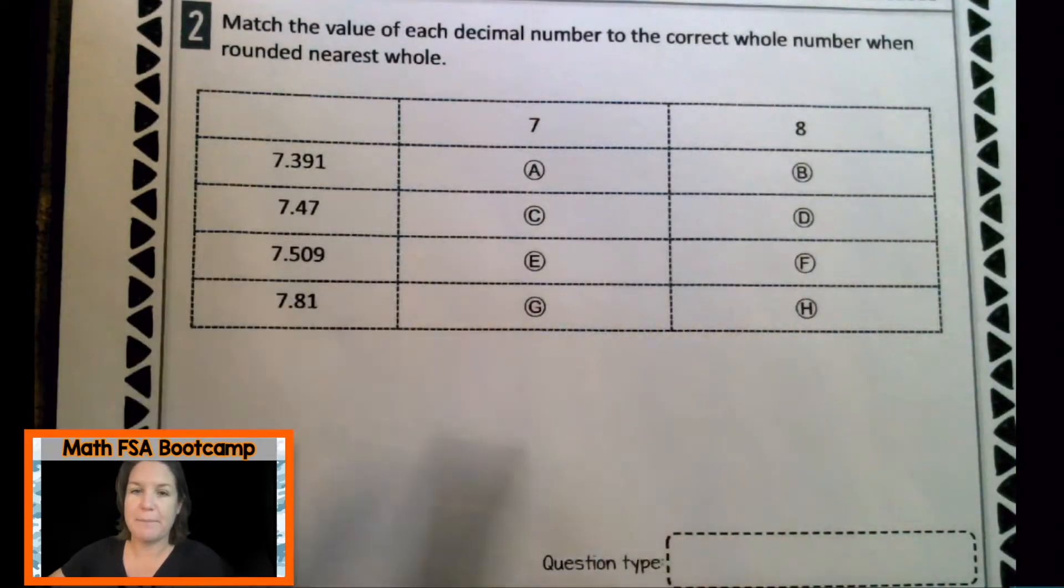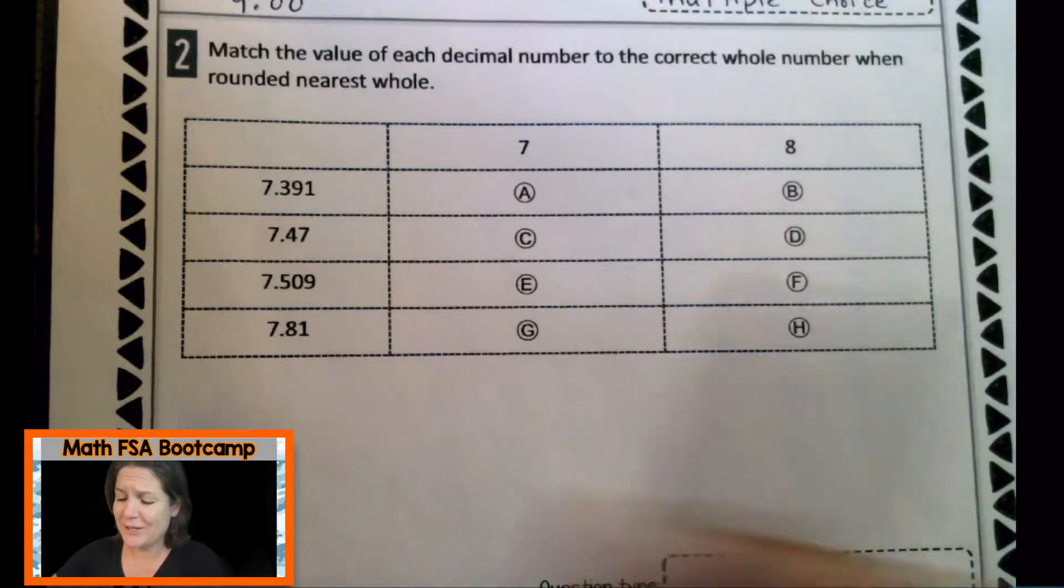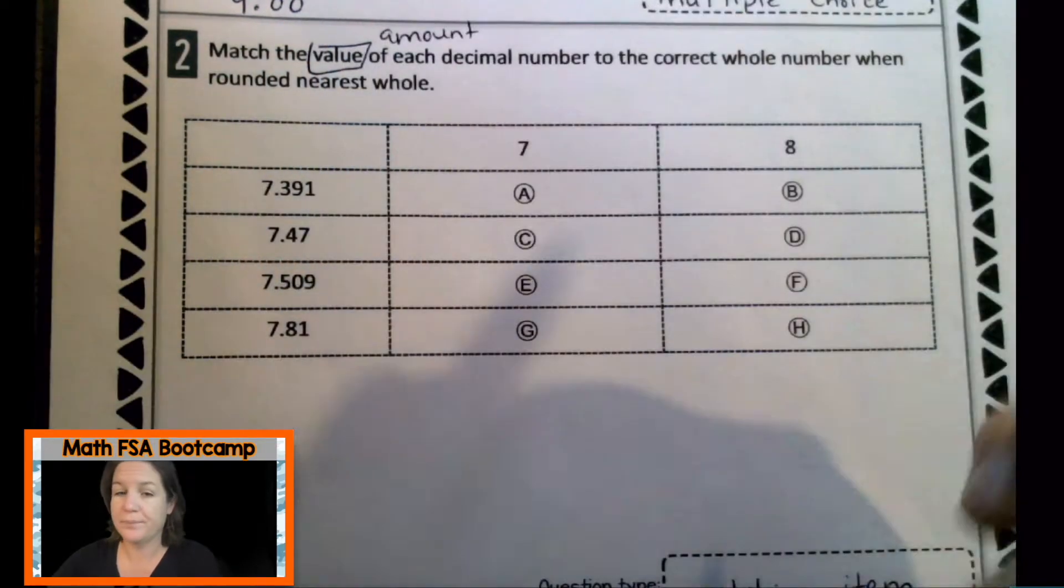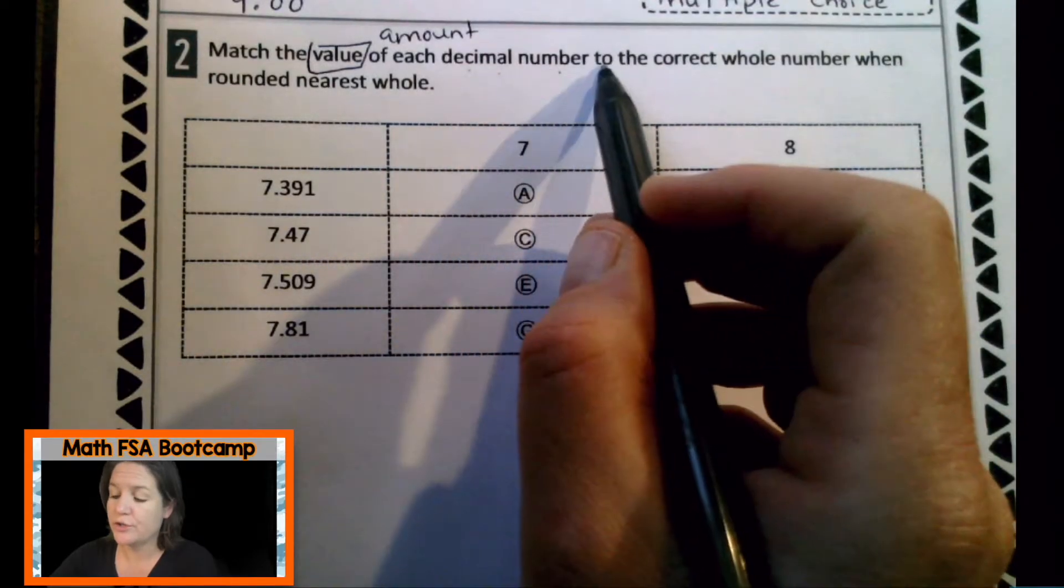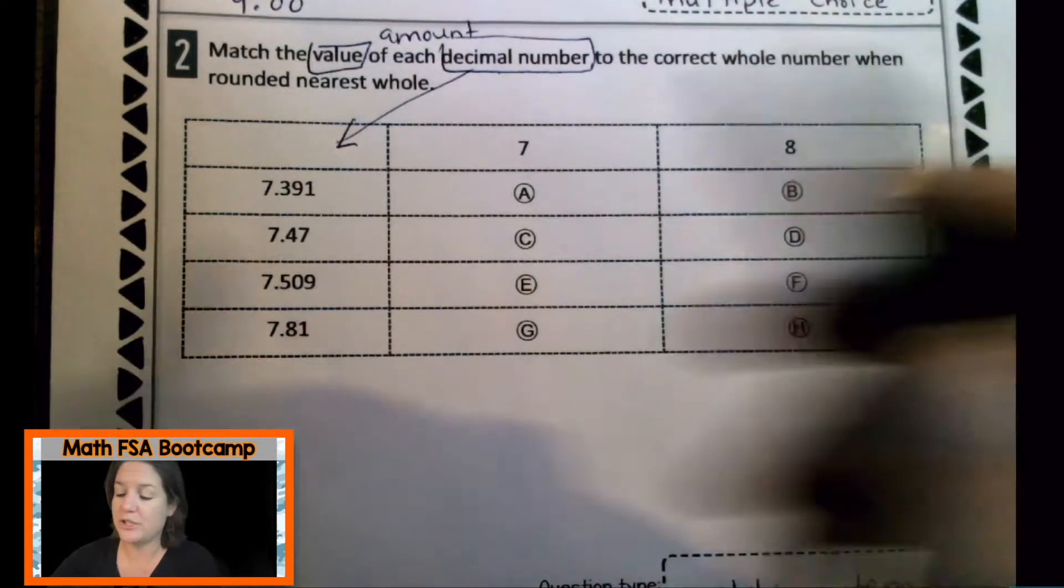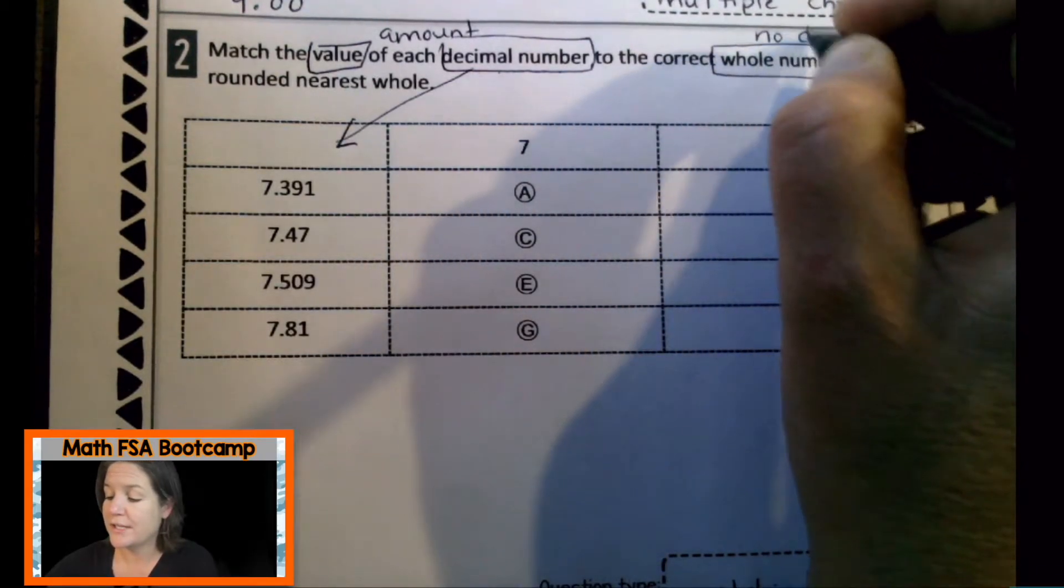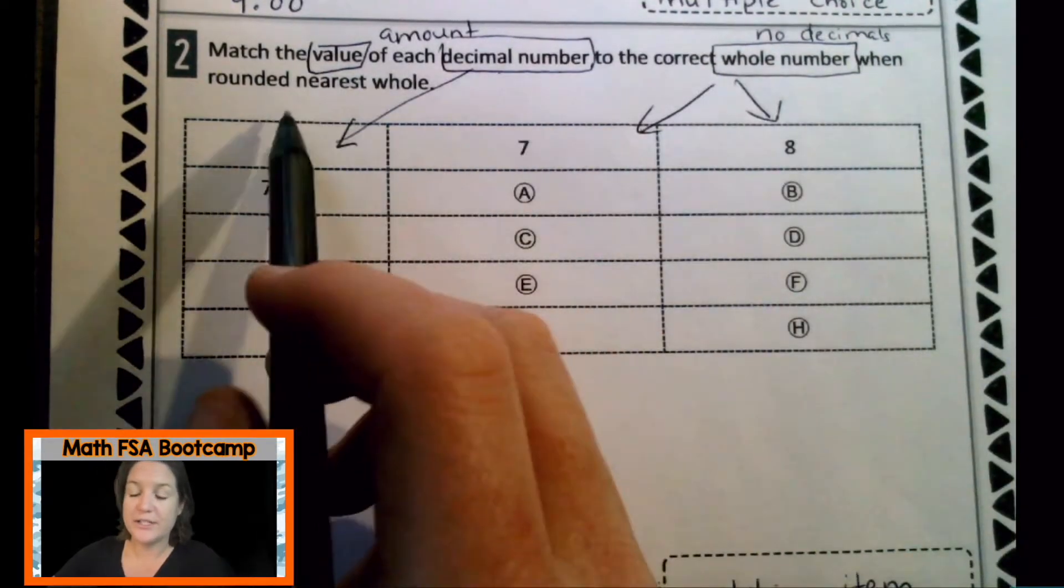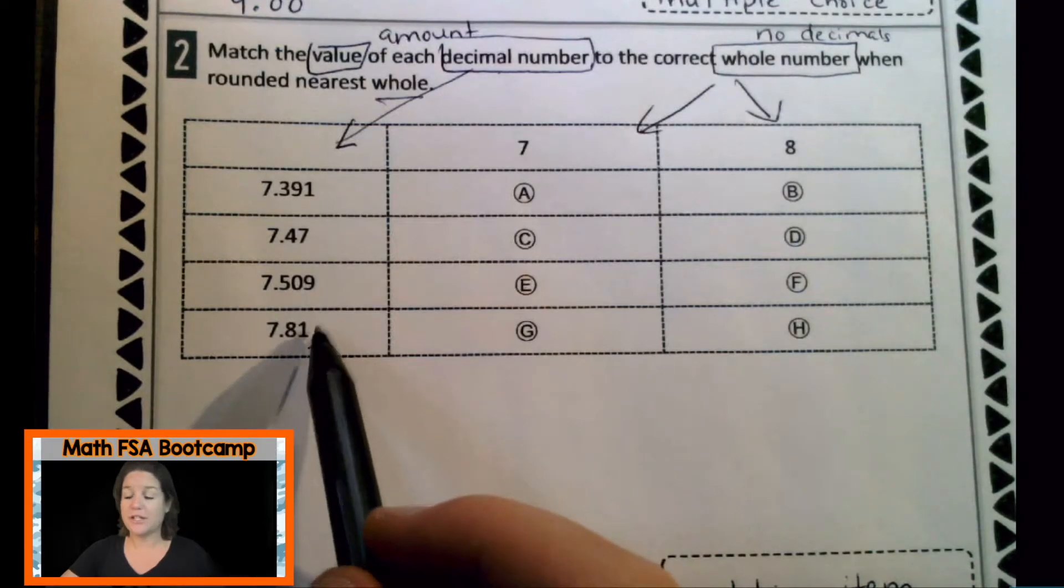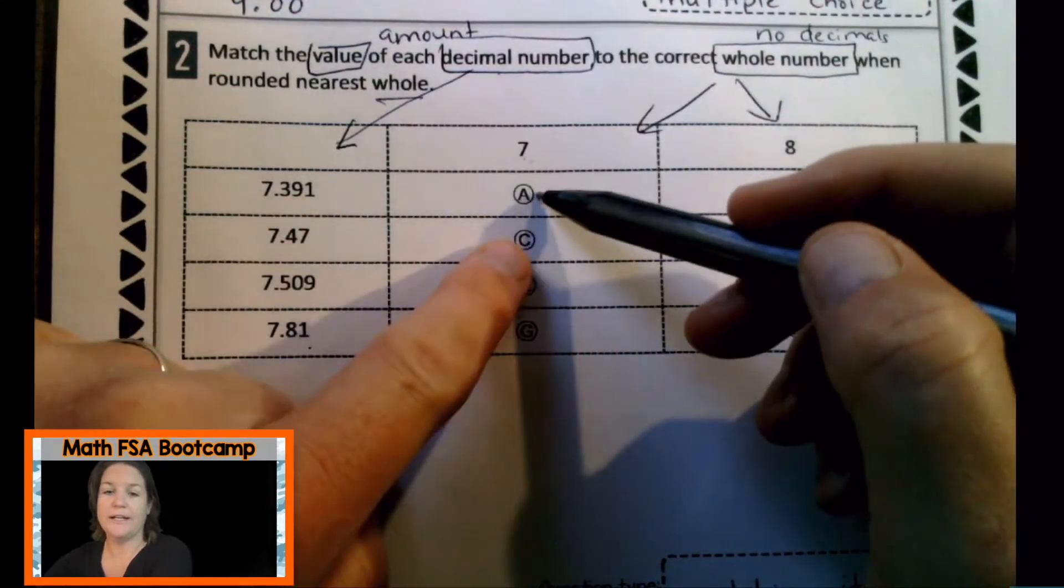This says match. This definitely looks like a matching problem. So we are going to refer to this type as the matching item. Now let's read and mark up our text. Okay. Match the value, which is the amount of each decimal number to the correct. So these are the numbers with a decimal in it, which are right here. I'm going to match these decimal numbers to the correct whole number. A whole number means that there are no decimals or fractions when rounded to the nearest whole. Okay. So we are going to take these numbers that have decimals and we will match them to the correct whole numbers up there. The way that we will match it is we'll determine is it seven or is it eight and we'll line it up.